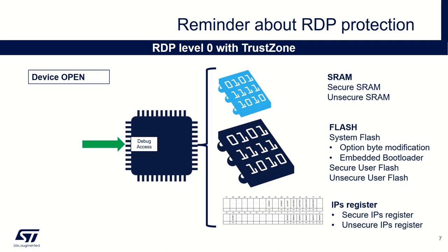When TrustZone is activated, we will now have to distinguish secure and non-secure world, and this for all the resources: SRAM, flash and also the register IPs. For level 0, all the resources are accessible through the debugging link.